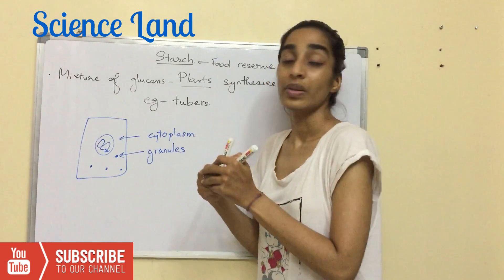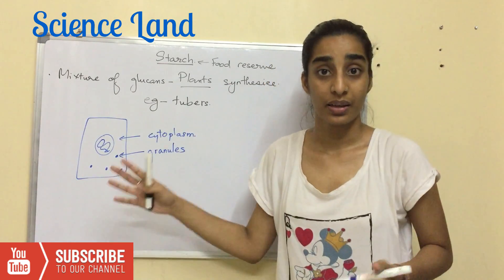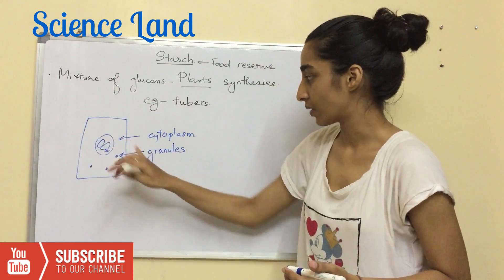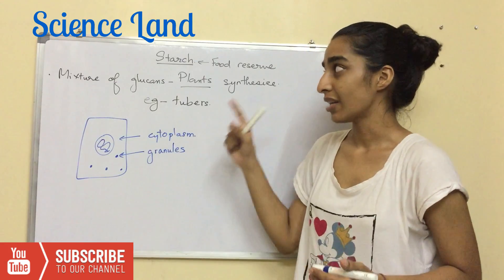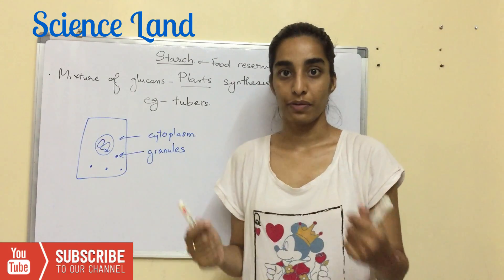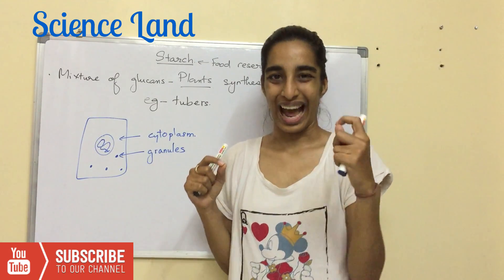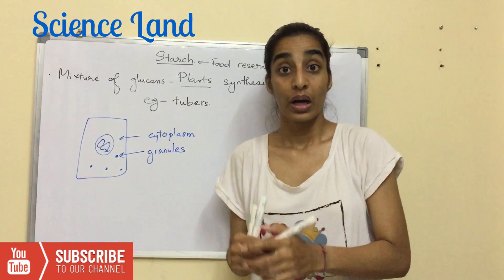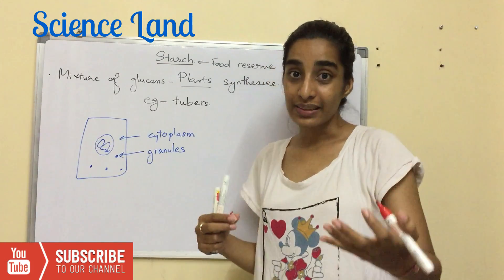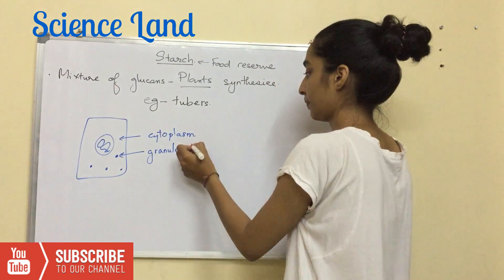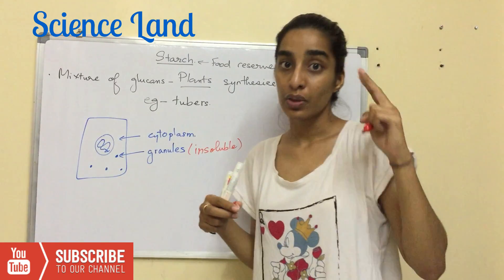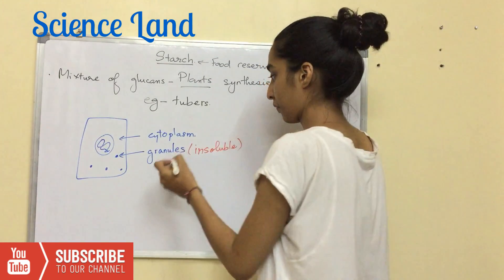In a plant cell, we have a nucleus and cytoplasm. Starch is stored in the form of granules. These granules are insoluble and are made up of two components.